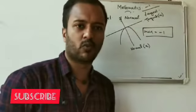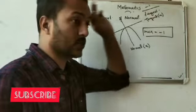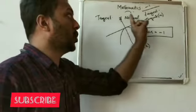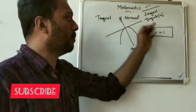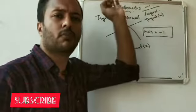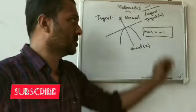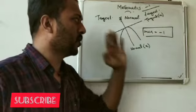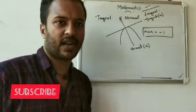Slope of tangent into slope of normal is equal to minus 1.